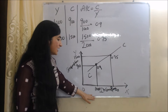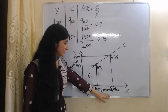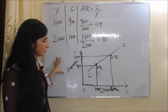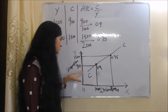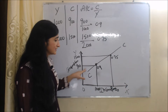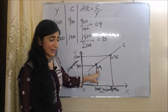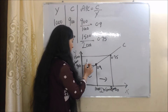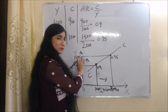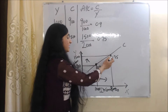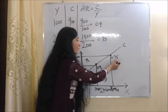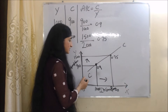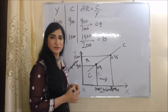Now we will see APC with the help of this diagram. On the X-axis we have income, and on the Y-axis we have consumption. When our income is 1,000, our consumption is 900, and our APC is 0.9. When our income increases to 2,000, our consumption increases to 1,500, and our APC is 0.75. When we join these points, it becomes our consumption curve, and CC is our consumption curve.